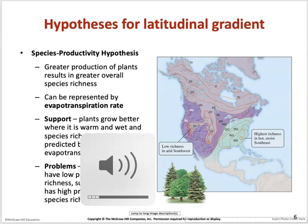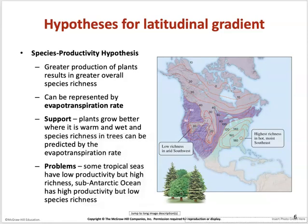A third hypothesis is species productivity: high richness occurs in hot, moist areas while arid regions like the southwest desert have very low richness. Greater plant production correlates with greater overall species richness, represented by the rate of evapotranspiration. However, some tropical seas have very low productivity but high richness, and the sub-Antarctic Ocean has high productivity but low species richness, showing that productivity does not always lead to greater diversity.